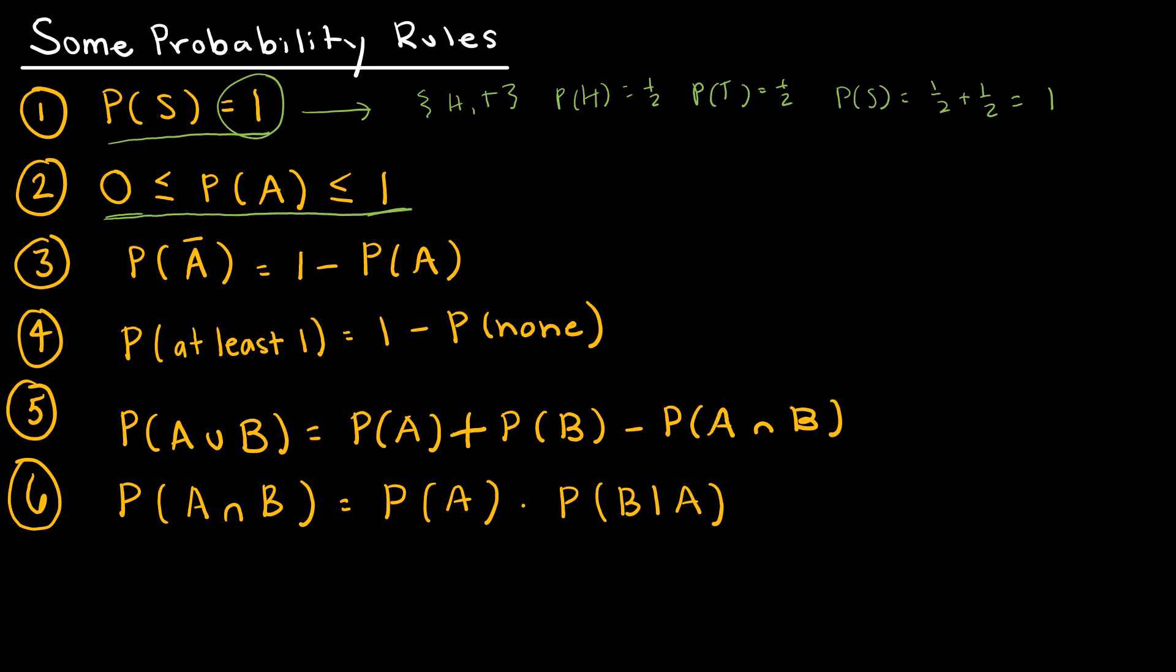Number 3 is called the complement rule. All of that is saying is that sometimes it's easier to do the opposite problem. For instance, let's say I wanted to find the probability that I don't roll a 3. This is pretty easy to do either way. When I roll a die, it's going to be 1, 2, 3, 4, 5, 6. So I could say the probability of not 3 is 1, 2, 4, 5, 6 out of 6 total. And that certainly works. In this case, it's just as easy to do it this way as to use the complement rule.